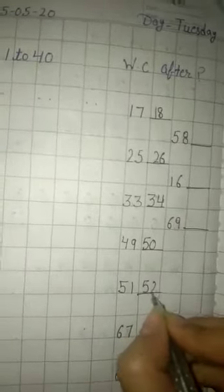Next is 5, 1, 51. After 51 comes 5, 2, 52.